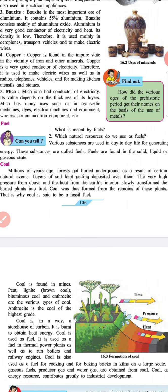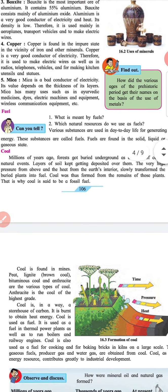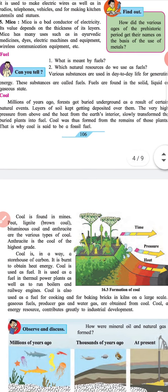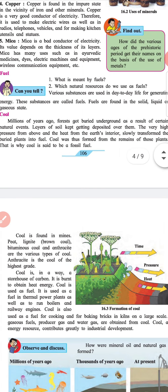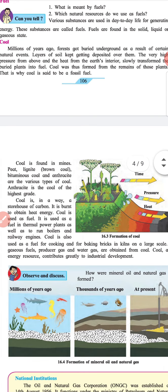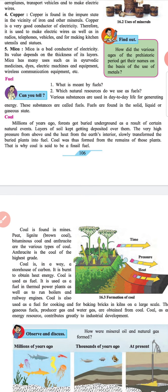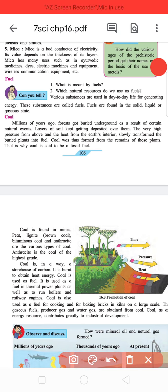Coal: Millions of years ago, forests got buried underground as a result of certain natural events. Layers of soil kept getting deposited over them. The very high pressure from above and the heat from the earth's interior slowly transformed the buried plants into fuel. Coal was thus formed from the remains of those plants. That is why coal is said to be a fossil fuel.